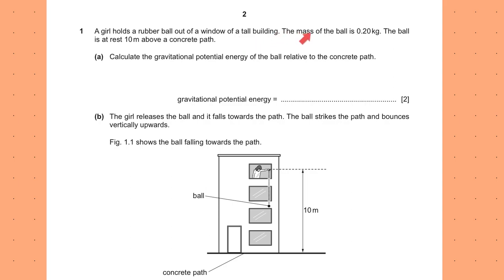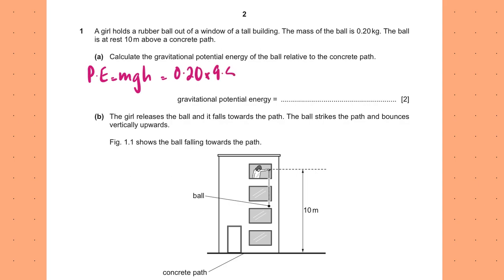The mass of the ball is 0.2 kg. The ball is at rest 10 meters above a concrete path. Calculate the GPE of the ball relative to the concrete path. Very straightforward — just MGH. Always write the formula: M is 0.2, G is 9.8, and H is 10. Multiply all of these together and that's your answer for the GPE — that should be 20 joules.